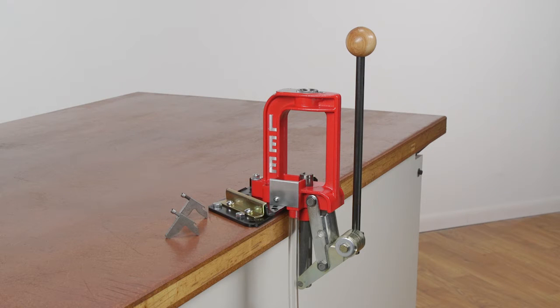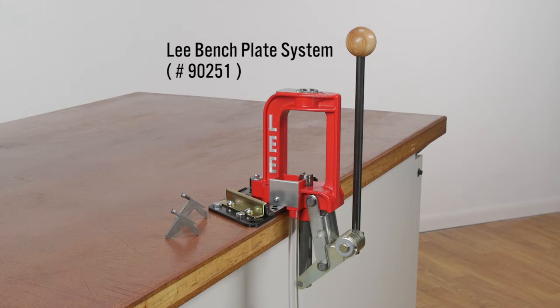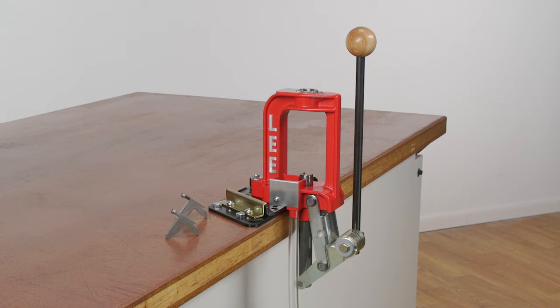The Lee Breech Lock Challenger is produced out of ASTM 380 aluminum alloy and shown mounted to our Lee bench plate system. It includes small and large priming systems. This press is designed for batch loading, sizing, charging, and seating bullets.